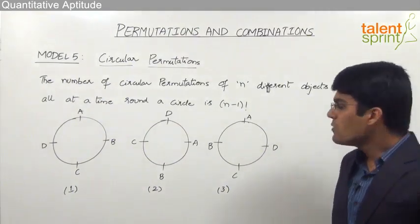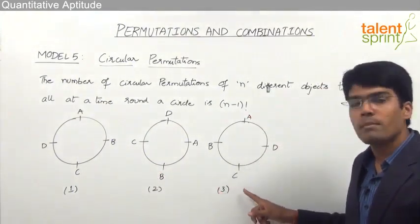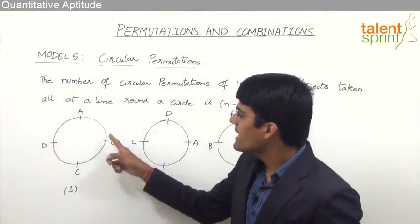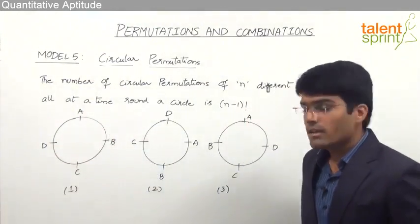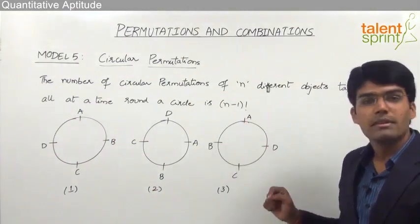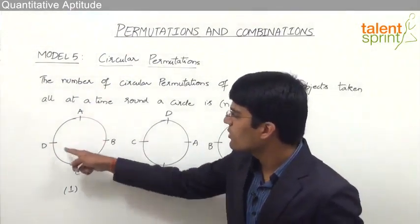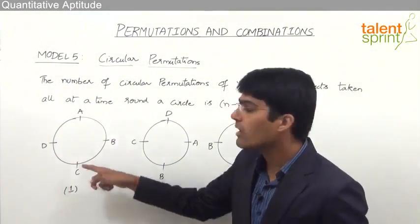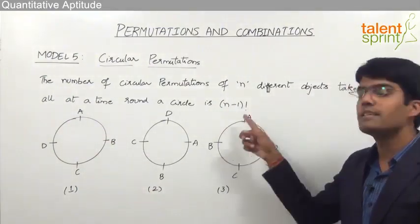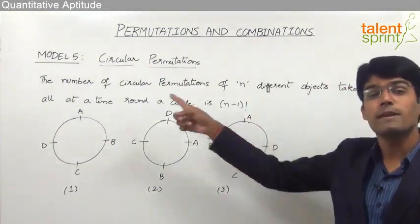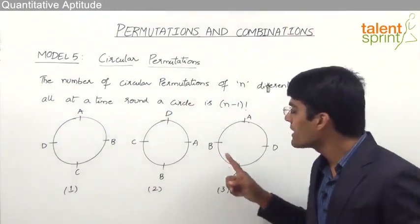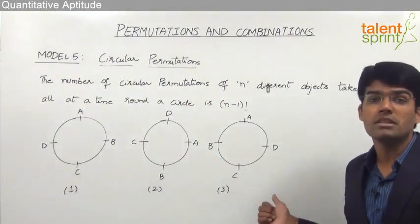Now comparing arrangement one with arrangement three: in arrangement one the clockwise order is A, B, C, D, but in arrangement three the clockwise order is A, D, C, B — which is different from the first. So arrangement one and arrangement three are different from each other.